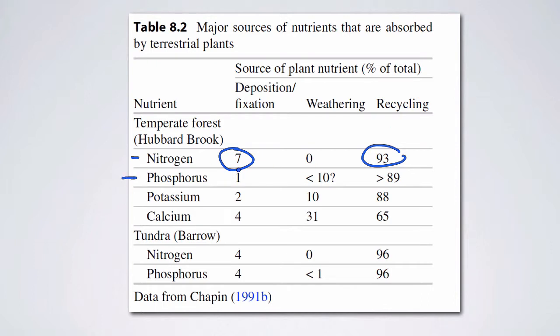Phosphorus, which is a rock-derived element, somewhere on the order of 10 or less percent comes from weathering, and somewhere on the order of 90% is recycling, and a little bit comes from deposition of dust. Potassium and calcium are similar to phosphorus, and then 10 or 30% come directly from rocks. And still, the majority is recycling.